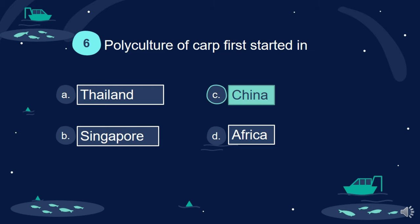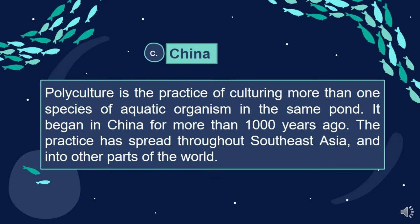Answer: C. China. Polyculture is the practice of culturing more than one species of aquatic organism in the same pond. It began in China more than 1,000 years ago. The practice has spread throughout Southeast Asia and into other parts of the world.